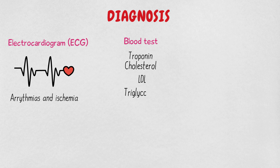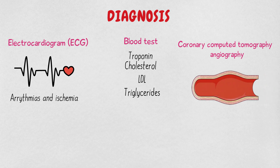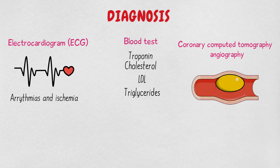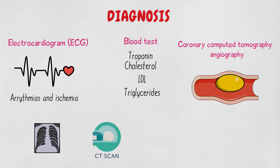Blood tests can also identify elevated cholesterol (LDL) and triglycerides that place you at higher risk for coronary artery disease and therefore angina. Coronary computed tomography angiography evaluates the coronary arteries to determine the extent of narrowing due to plaque. Some other tests which may be performed include chest X-ray, CT of the chest, MRI, and catheter angiography.